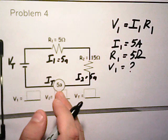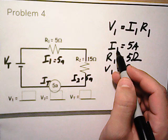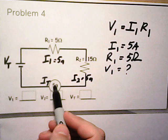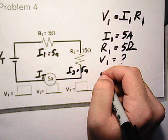So we have our problem here. V1 equals I1 times R1. We have I, we have R. We got I from the total current, which was five amps, which is the same as I1, and R1, which is five.